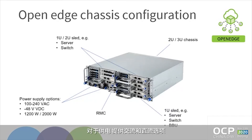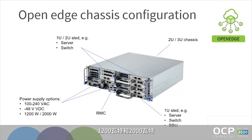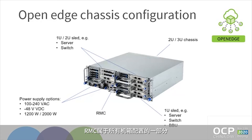For the power feed, there are options for AC and DC. And also for different applications or different form factors of the chassis — say a 2U chassis — there are also lower power PSUs available: 1200 watts and 2000 watts. RMC is part of all chassis configurations.